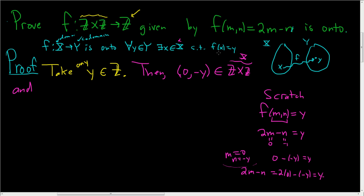Now we just have to verify that f of x is equal to y. f of (0, negative y). Well, what's that going to be? That's 2 times 0, M is 0, minus N which is negative y, and that's simply y.